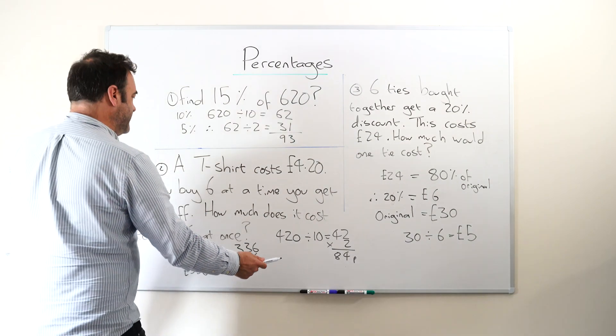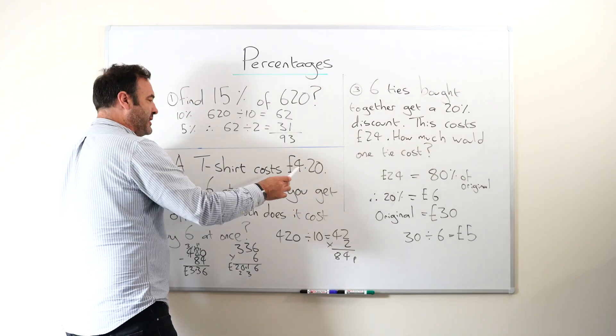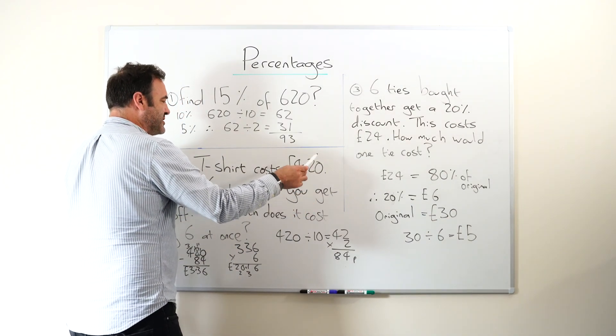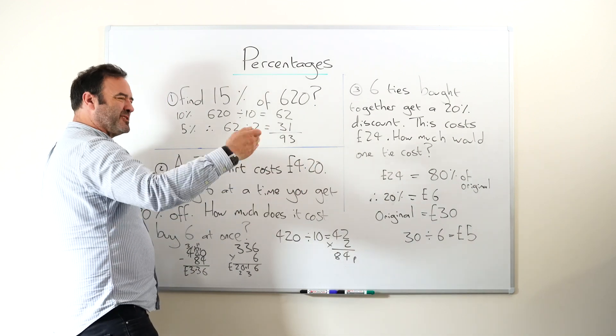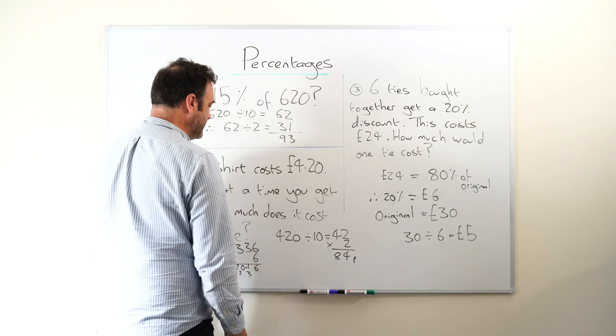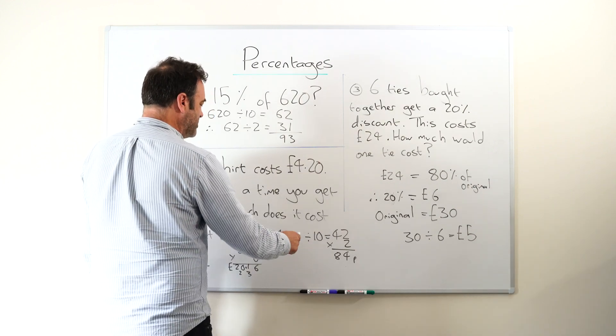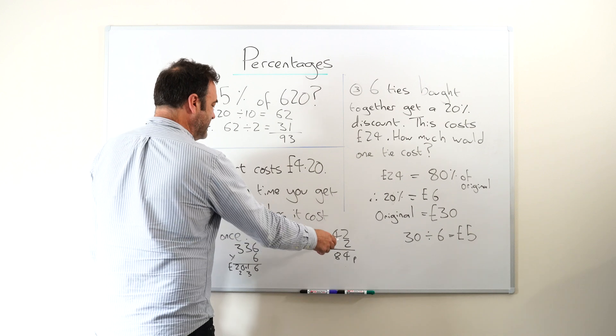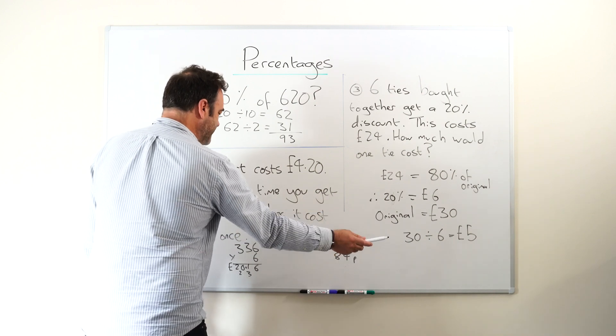Because we're dividing into four pounds 20, this is important for kids to remember, it's better to turn it into pence. So 420, because we're going to divide it, just makes it easier. We can always turn it back to pounds and pence at the end. So 420 divided by 10 is 42, that's 10%, double it, 84 pence.